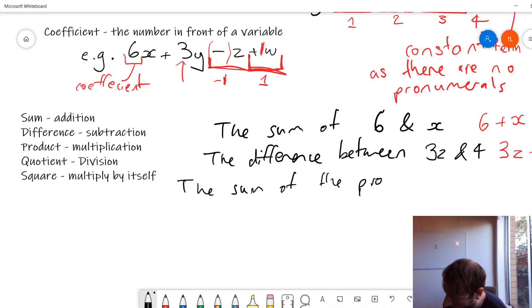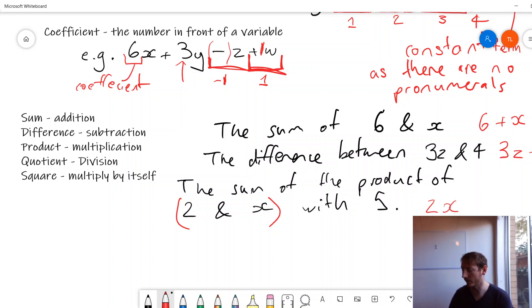Now this is going to be trickier. So product is just going to be multiply. Let's say the sum of the product of 2 and x with 5. So the sum of the product of 2 and x with 5. So 2 and x, what's the product of 2 and x? Well remember in algebra, we don't write the multiplication sign. If we see something like this, 2x, it means 2 times x. And then we need the sum of that product with 5, so we add on 5. And there we go.